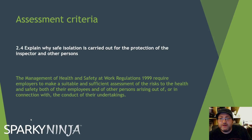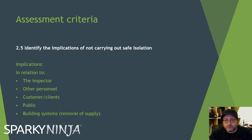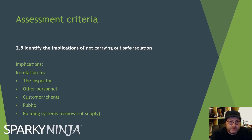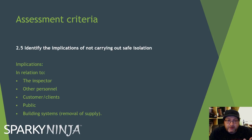2.5: Identify the implications of not carrying out safe isolation. In relation to the inspector — electric shock, really. To do suitable inspection requires suitable access to connections, inspecting connections in trunking and all sorts. If any of that equipment is not isolated and is energized, you may manipulate damaged cabling, and there are increased risks.